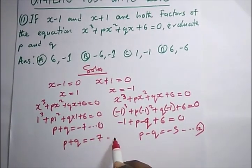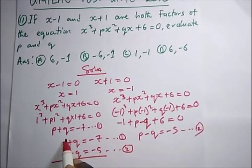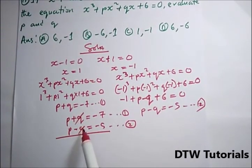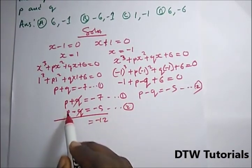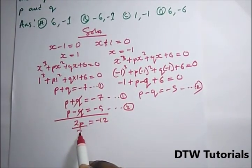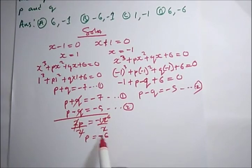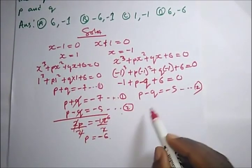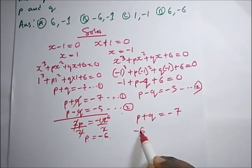This is a simultaneous equation. Using the elimination method on equation one (P + Q = −7) and equation two (P − Q = −5), we add them: −7 + (−5) = −12 and 2P. Dividing both sides by 2 gives P = −6.